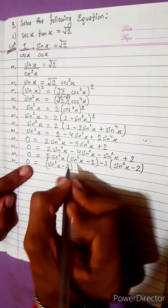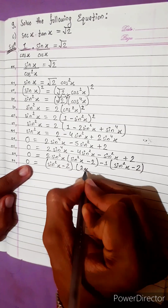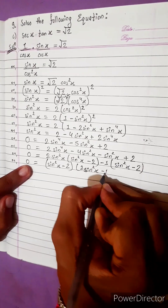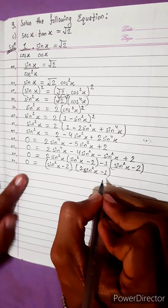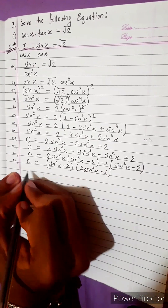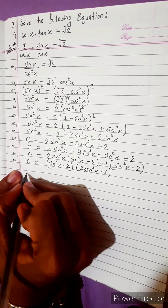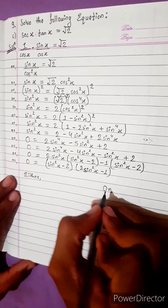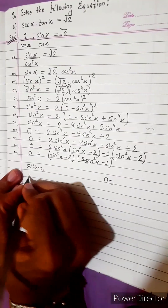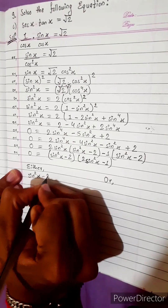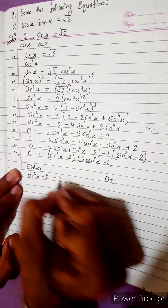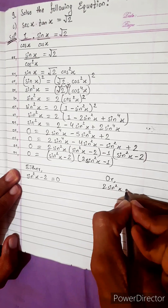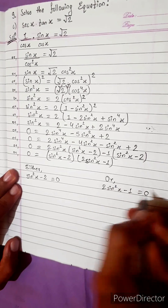The remaining term is two sine squared x minus one. So this is the remaining term. After that we cannot do anything else, so let's do either-or: either sine squared x minus two equal to zero, or two sine squared x minus one equal to zero.